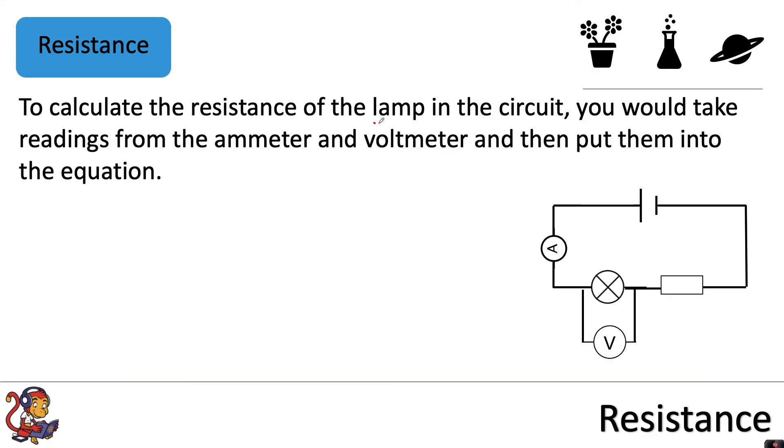To calculate the resistance of the lamp in the circuit, you would take the readings from the ammeter and the voltmeter and then put them into the equation.